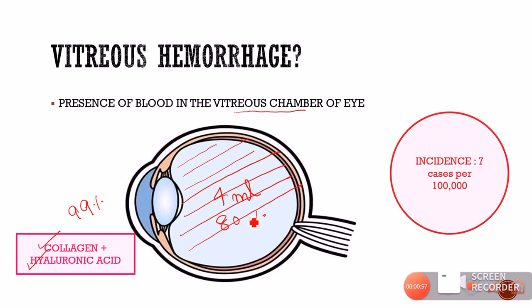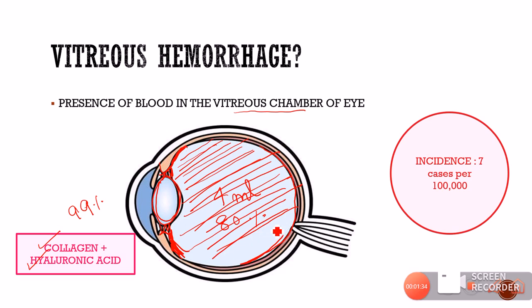By definition, the vitreous chamber is the space present behind the lens. It is bounded anteriorly by the ciliary body and the lens capsule, and posteriorly by the internal limiting membrane, which is the innermost layer of the retina. On the lateral side it is bordered by the non-pigmented epithelium of the ciliary body. Blood in this vitreous chamber is known as vitreous hemorrhage.